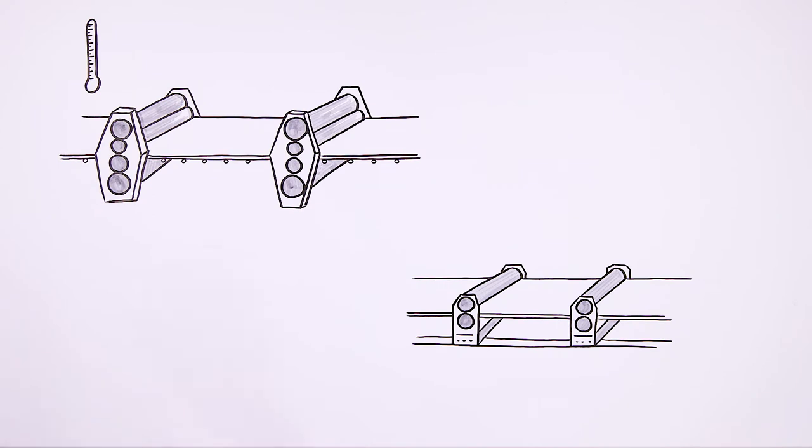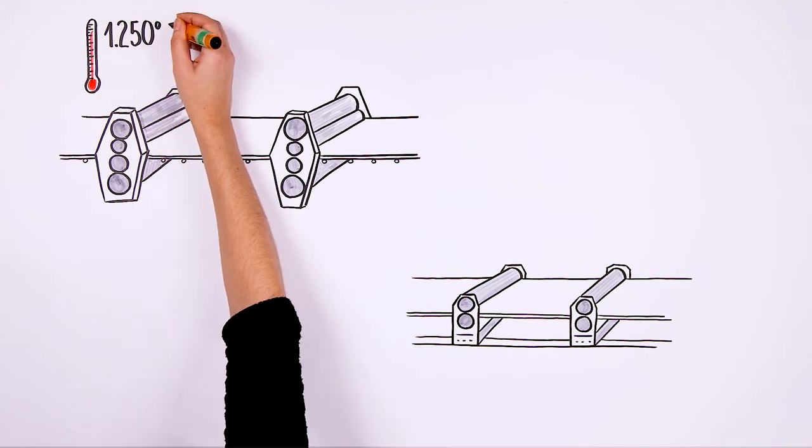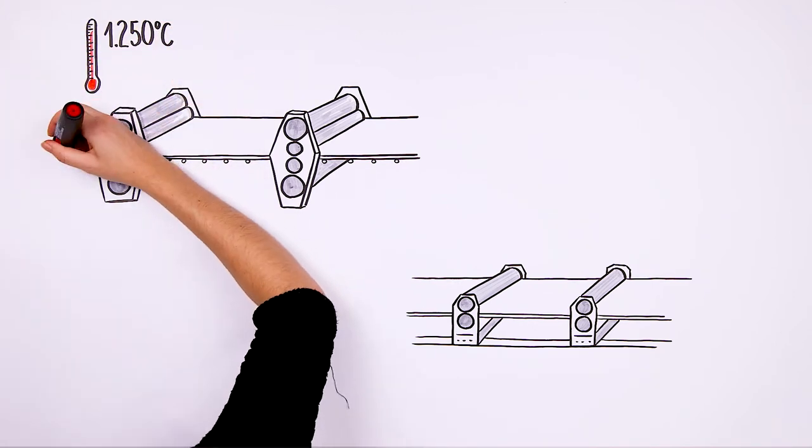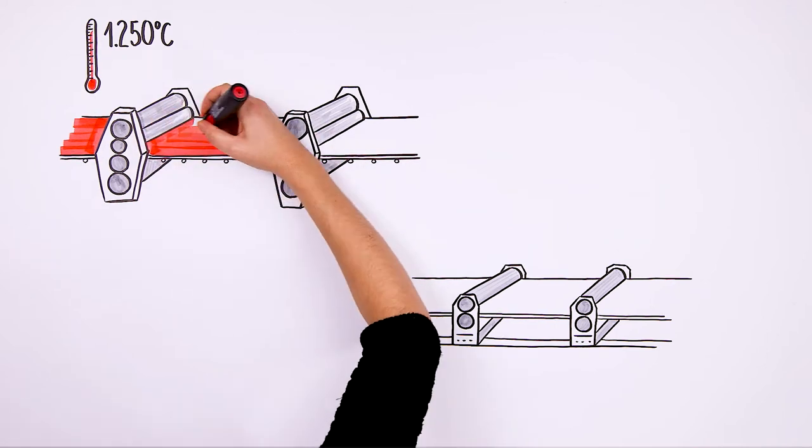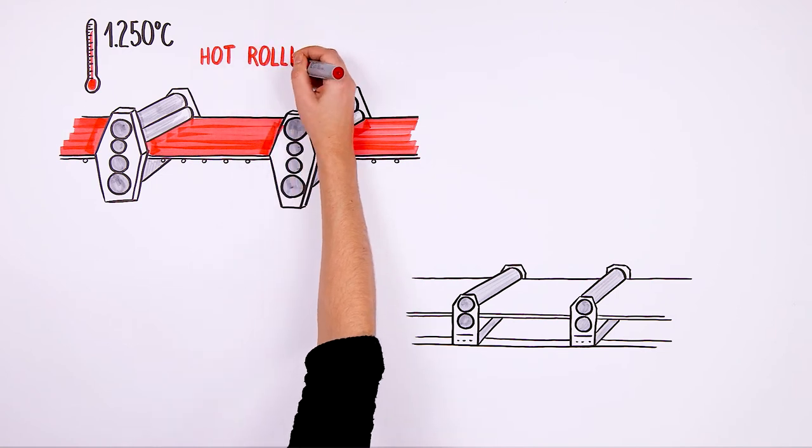Most often, however, it still undergoes the rolling process. The steel charge is heated in the furnace to 1250 degrees C, then shaped between turning rolls, and finally cooled by a stream of water. This process is called hot rolling.